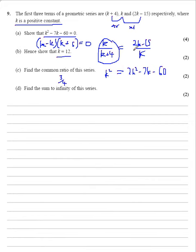If we use the other fraction, we'd get 2 times 12 is 24 take away 15, so 9 over 12, which is again 3 quarters.